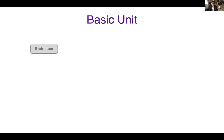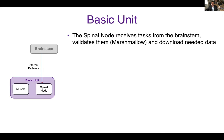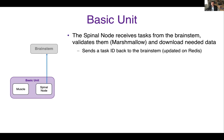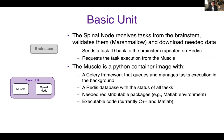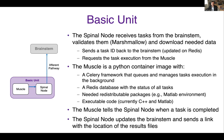The actual work is done by the basic unit. Each basic unit is made of two components: the spinal node and the muscle. The spinal node receives tasks from the brainstem, validates them using a tool called Marshmallow, and downloads the needed data for the computation. If the task is valid, it sends a task ID back to the brainstem and requests task execution from the muscle. The muscle is a Python container image with a Celery framework that queues and manages task execution in the background, a Redis database with the status of all tasks, the needed redistributable packages — for example, if you're using MATLAB, the environment is downloaded only once — and the executable code, which is currently in C++ and MATLAB. The muscle tells the spinal node when a task is completed, and the spinal node updates the brainstem and sends a link with the location of the results file.